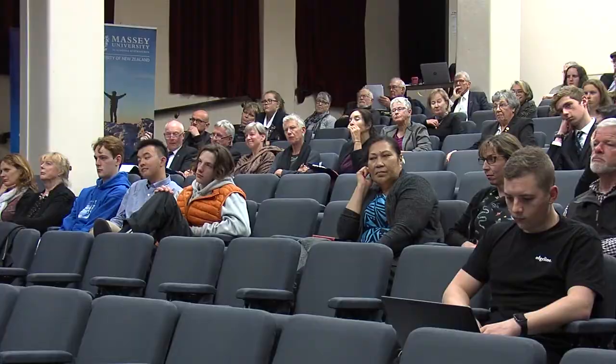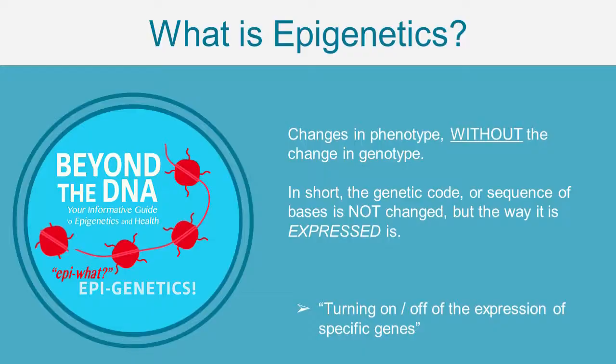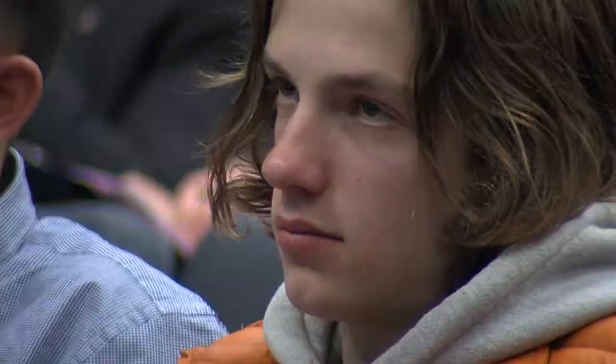To control the expression of genes, we must first understand what epigenetics is. It is changes in the phenotype without changes in the genotype. In short, our sequence of bases isn't changed, but the way they are expressed is. Epigenomes can either boost or interfere with the transcription of specific genes — in layman's terms, this is where our DNA creates readable instructions to make proteins.